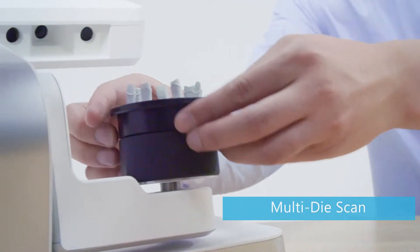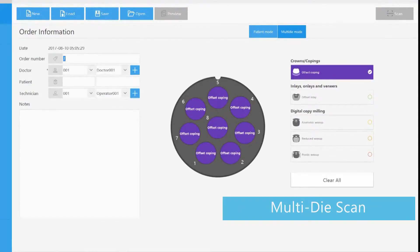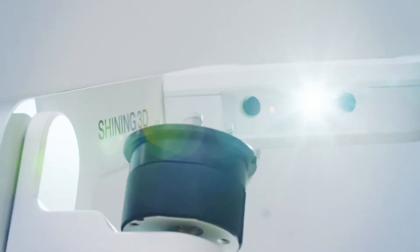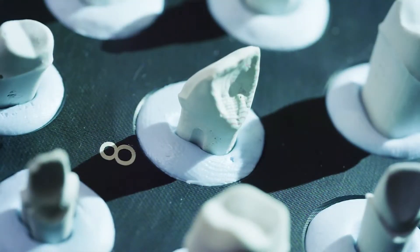Autoscan DS-EX comes with multi-die scan function. It can scan up to 8 dies simultaneously with fine details to increase your working efficiency.